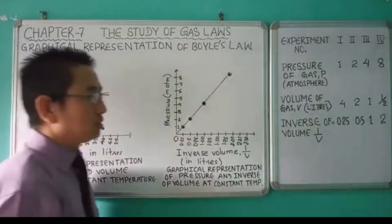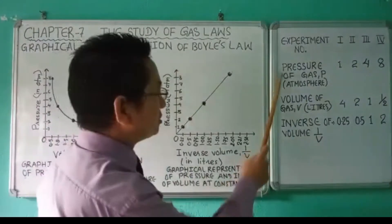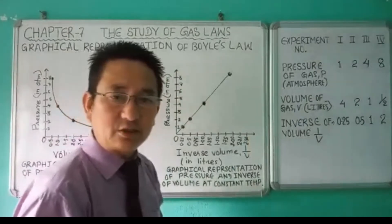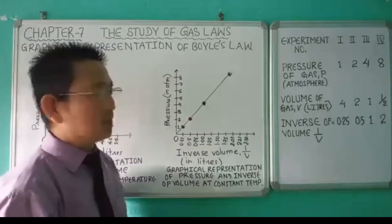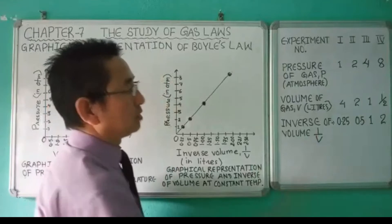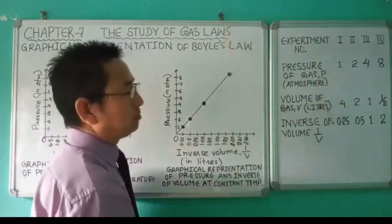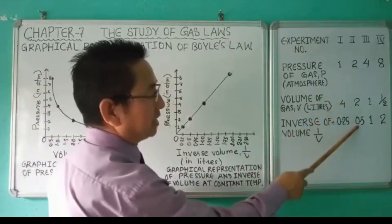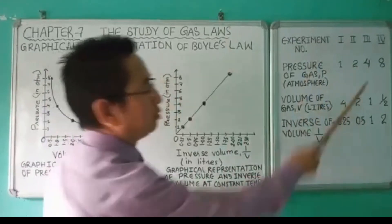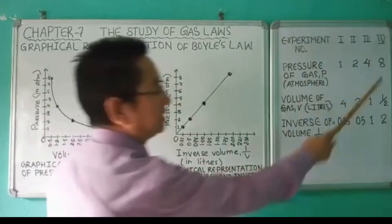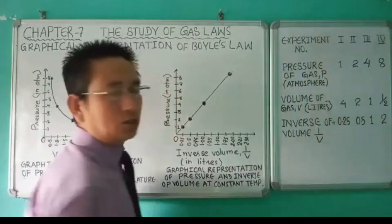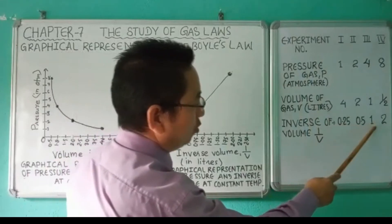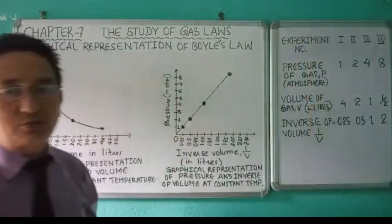From this, we conclude that the product of pressure and volume is constant, while the temperature remains constant. Similarly, we can calculate the inverse volume: 1 divided by 4 gives 0.25; 2 divided by 4 gives 0.5; 4 divided by 4 gives 1; and 8 divided by 4 gives 2. So the inverse volumes are 0.25, 0.5, 1, and 2.